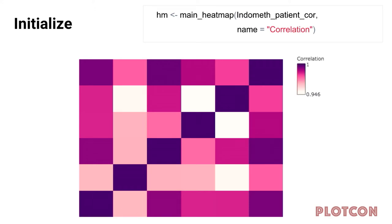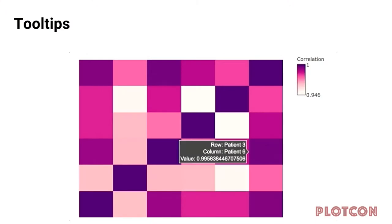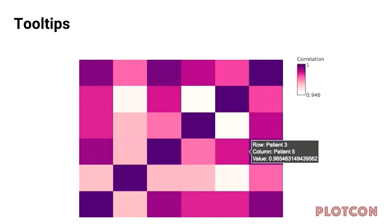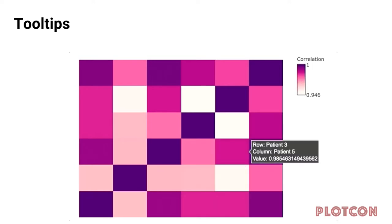In terms of how you would initialize this, it's just a simple function for creating one of these basic heat maps. This basic heat map created using a function called main_heatmap will already have interactivity. Here I'm displaying correlation for some patients in terms of the concentration of a drug over time — just a basic correlation heat map. If you moused over things, you could see additional information such as the particular values of the correlation — you can see these are actually all highly correlated — and also see which patient is represented by each block.